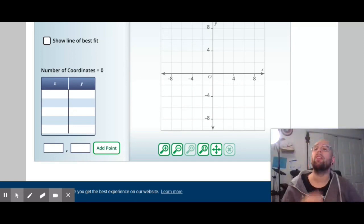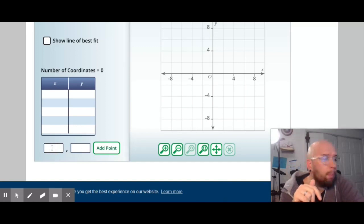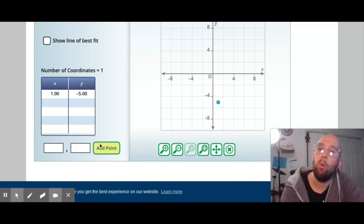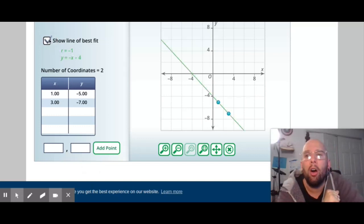I want to find the equation of a line connecting those points. This is what I do: I go down here to where it says add points and I type in my two points - one negative five add point, and three negative seven add point.